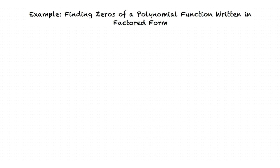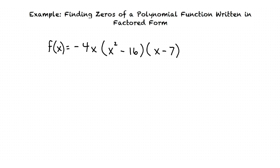We are given f of x equals negative 4x times the quantity x squared minus 16 times the quantity x minus 7. Our goal is to find all the real zeros of the function f of x. This means we're going to find all the values that make f of x equal 0.